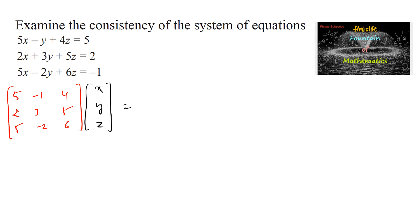And the constant terms we can write here are 5, 2, and -1. So the given system is in the form of Ax = b in matrix form.